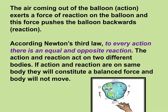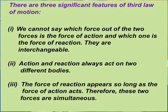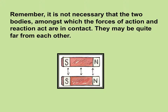Newton's third law of motion states that to every action there is an equal and opposite reaction. The action and reaction act on two different bodies. If action and reaction were on the same body, they would constitute a balanced force and the body would not move. There are three significant features of the third law: we cannot say which force is the action and which is the reaction — they are interchangeable. Action and reaction always act on two different bodies. The force of reaction appears as long as the force of action acts, so these two forces are simultaneous. It is not necessary that the two bodies are in contact — they may be quite far from each other.